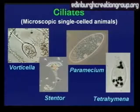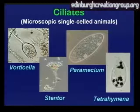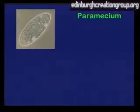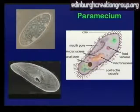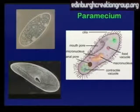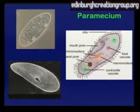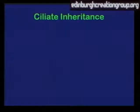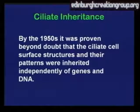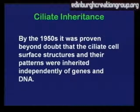As you can see by looking at those pictures, ciliates have quite a complex cell surface structure. They're covered in tiny hairs — cilia — which move them along, and these cilia are arranged in patterns around the organism. The rows of cilia have been stained to show up clearly. And by the 1950s, it was proven beyond doubt that the ciliate cell surface structures and their patterns were inherited independently of genes and DNA. This was demonstrated quite simply through surgical operations on these animals — removing or replacing structures.